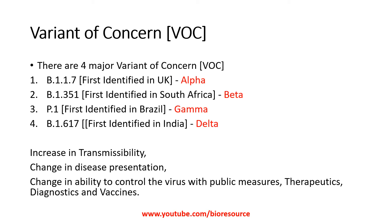A Variant of Concern has attributes showing increased transmissibility, change in disease presentation, and reduced ability to control the virus through public health measures, therapeutics, diagnostics, and even vaccines. Viruses carrying those mutations are classified as a Variant of Concern.